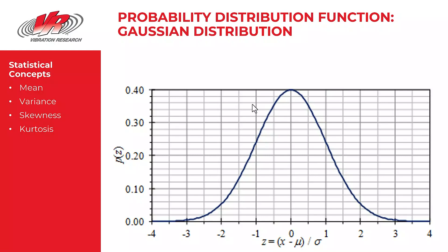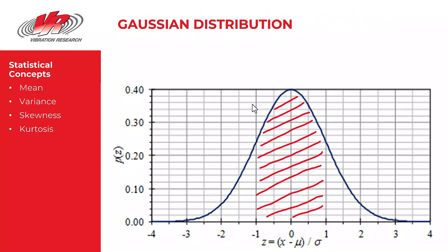For our purposes, we need to understand that random vibration testing assumes a Gaussian distribution of data. That is, if it's truly Gaussian, it will be symmetrical around the mean, no skewness. It'll have a kurtosis value of 3.